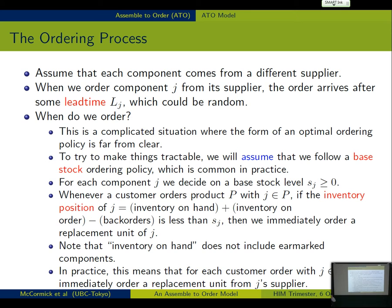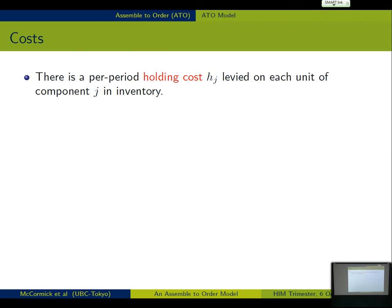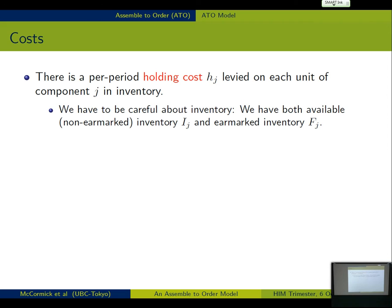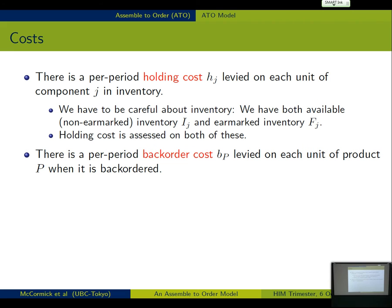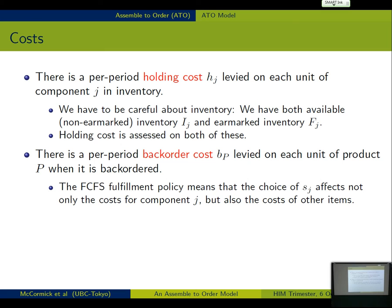So implicitly, we're assuming that there's no price break for batch ordering things. That it's fine for us to order them one by one. So we're going to assume there's holding costs levied on each component, which is levied on both the actual inventory and also on the earmarked inventory. There's a backorder cost levied at the product level. So that means that the products interact with each other because they have common components.